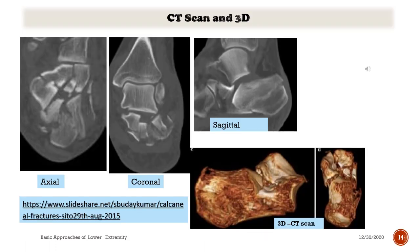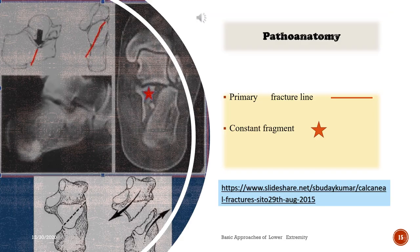CT scan and 3D imaging: notice the axial, coronal, and sagittal views, as well as the three-dimensional CT view. Regarding patho anatomy, the red line demonstrates the primary fracture line, and the star sign demonstrates the constant fragment. Notice the radiographs, CT, and figures.